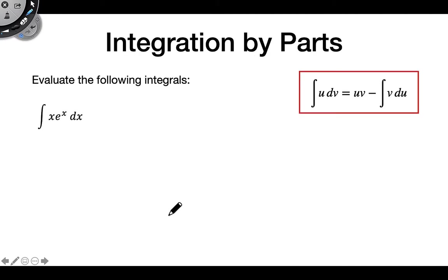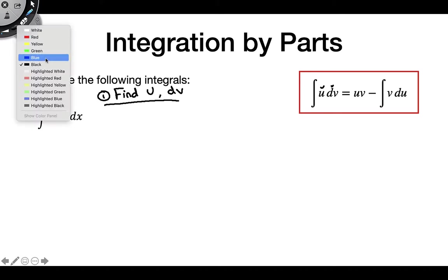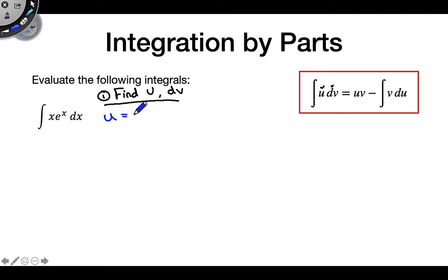Let's start with our first example. According to integration by parts, we have some function times the derivative of another function in our integral. Our first step is to find what u and dv are. Much like with u-substitution, this is a little bit tricky — there's no exact formula for figuring this out. Take my word for it for now that u is equal to x and dv is equal to e^x dx.